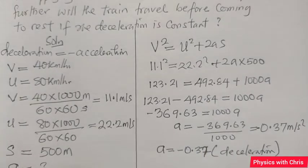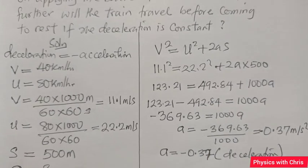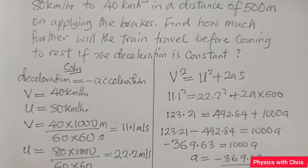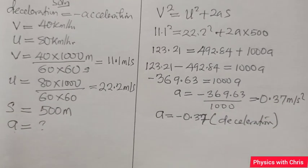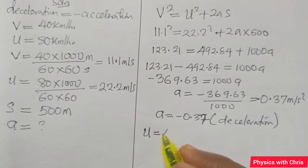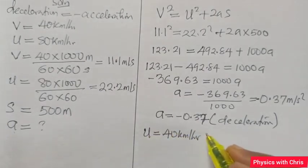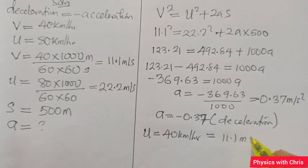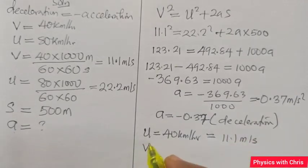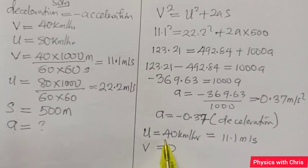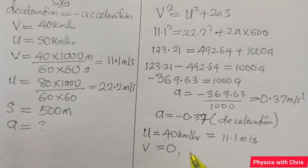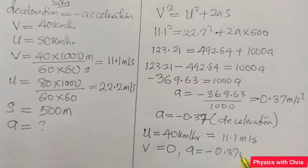Now supposing this acceleration is maintained, what further distance will the train cover before coming to rest? To solve that, we take the initial velocity as 40 km per hour, which converted to meters per second is 11.1 m/s. V now is zero, before the train is eventually brought to rest after decelerating from a speed of 40 to v equals zero. I'll maintain the same acceleration, which is -0.37 m/s².